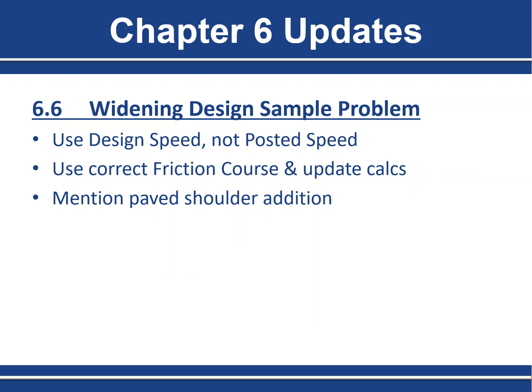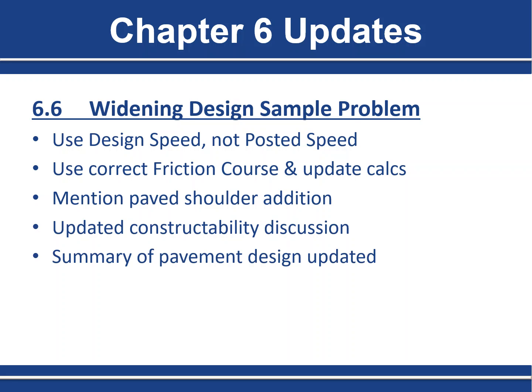We also noticed the problem statement did not mention the addition of paved shoulders, even though the calculations included it, so we added a sentence stating that a 5-foot paved shoulder is being added. After the calculations, the constructability paragraph was rewritten for clarity — a pavement design for 1 foot adjacent to a different design for 5 feet is not appropriate; it needs to be one design for a 6-foot width. We also updated the summary of the pavement design and Figure 6.1 to match all changes made to the calculations.